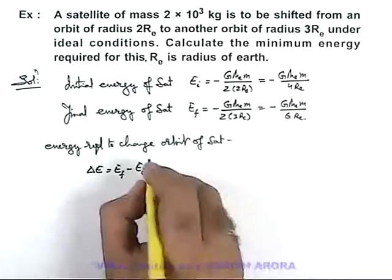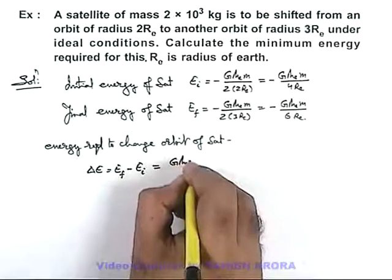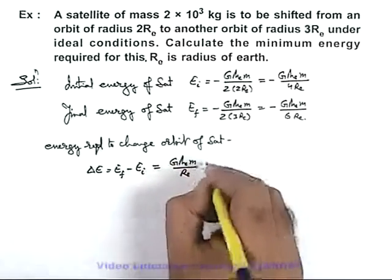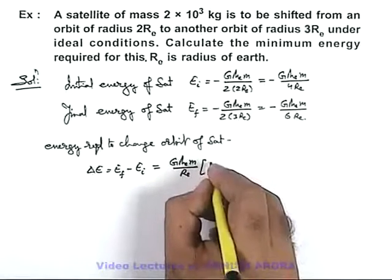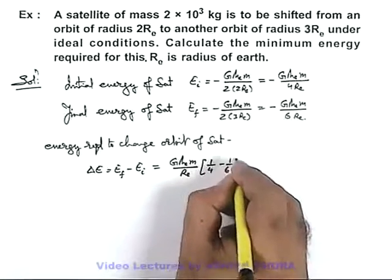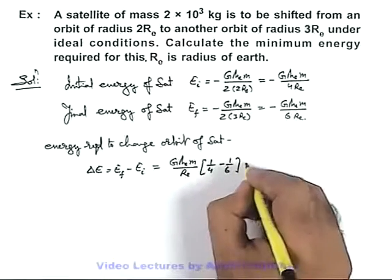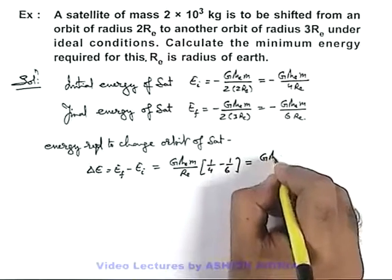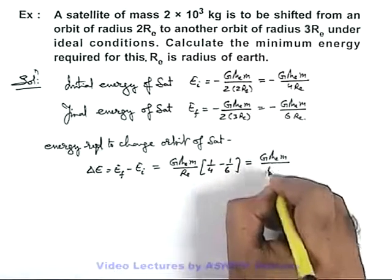If we use the values this can be written as GMₑm over Rₑ, and we are having the numerical parameters left, 1/4 minus 1/6. On simplifying we'll be getting GMₑm over 12Rₑ.